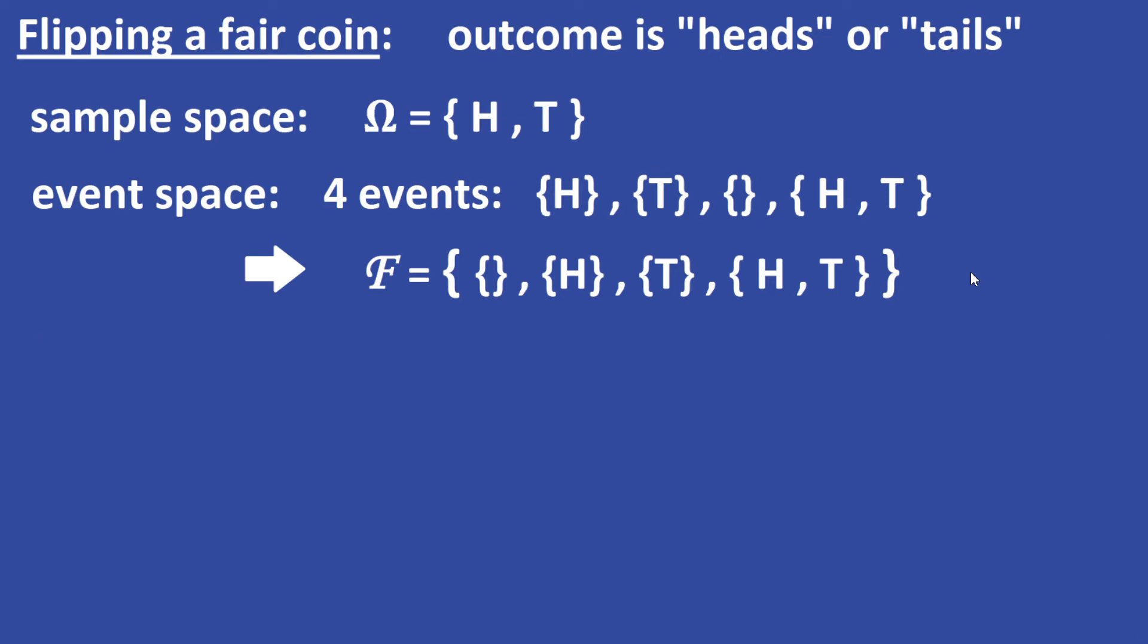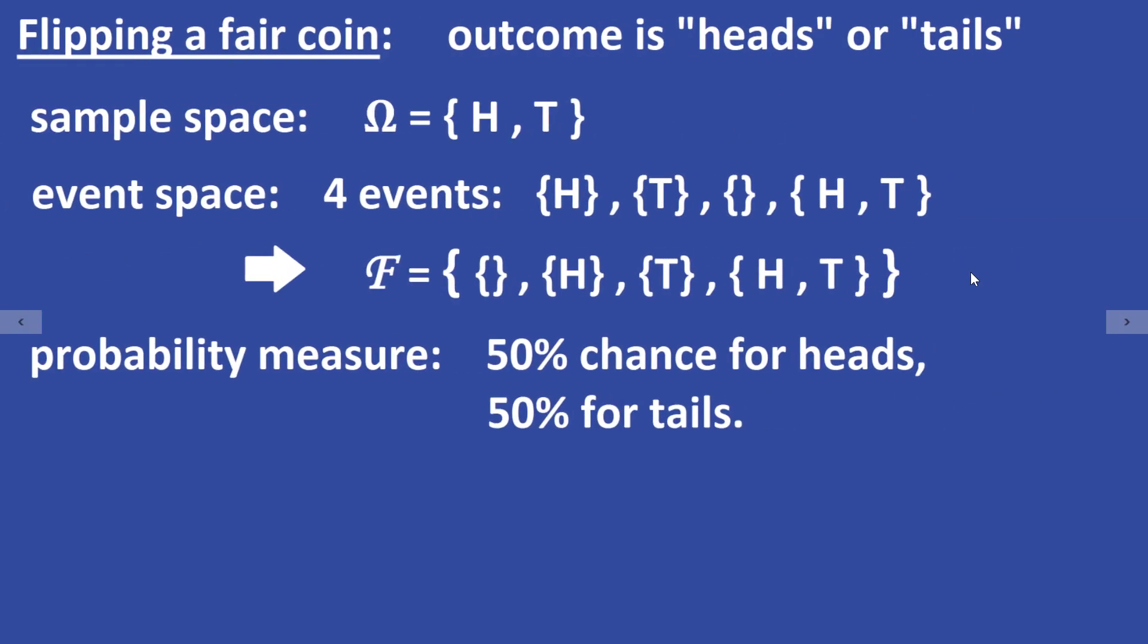The last element we need is a probability measure P. It assigns each event in the event space F a probability. There is a 50% chance of tossing heads and a 50% for tails.